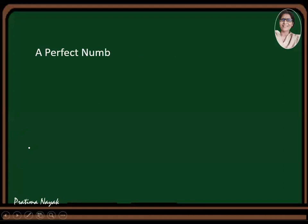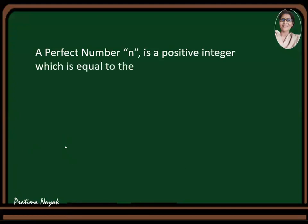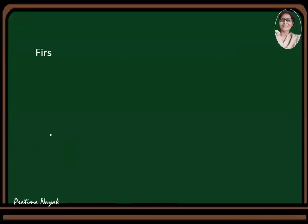A perfect number n is a positive integer which is equal to the sum of its factors, excluding itself. For example, the first perfect number is six. What are its factors? Six has divisors or factors one, two, three and six. Six has these four factors: one, two, three, and itself. One plus two plus three makes you six. It means when the sum of the factors excluding itself gives the same number, we call it a perfect number.